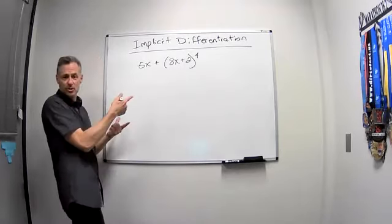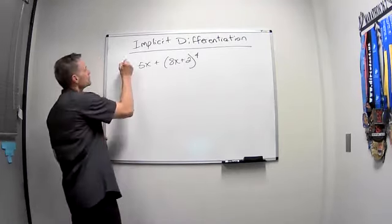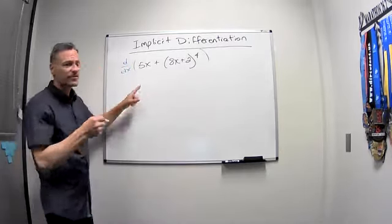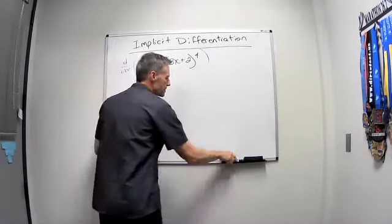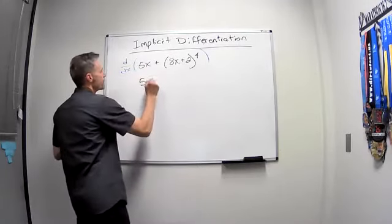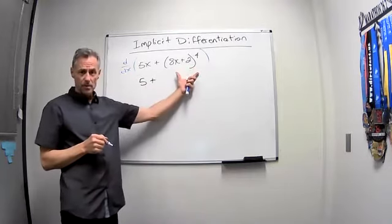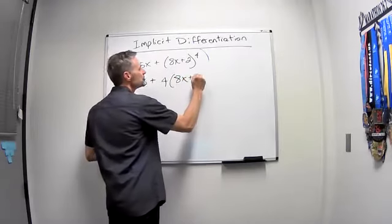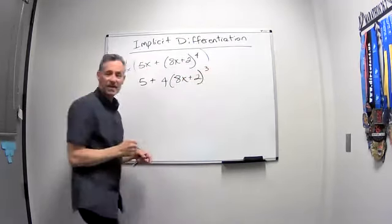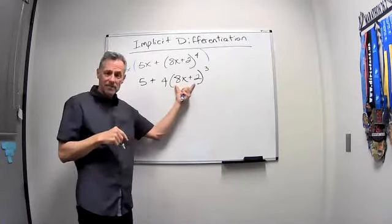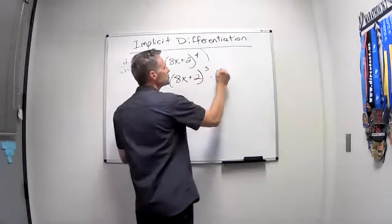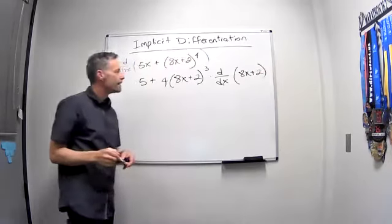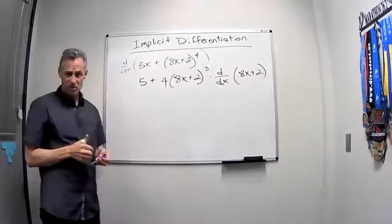So say I have this and I want to take the derivative with respect to x. So I take the derivative and we know the derivative of 5x is just 5. But over here I'm going to have to use the chain rule. So I'm going to bring the 4 down in front, leave the 8x plus 2 as it is, drop that down to the third power, but then the chain rule says times the derivative of this stuff inside. So times the derivative of 8x plus 2. And then I can go from there and finish the problem.